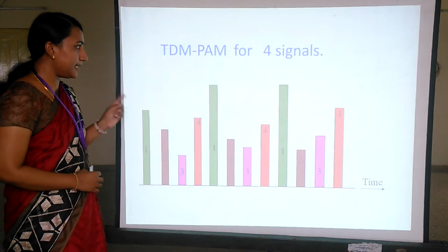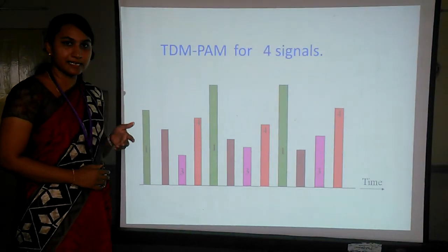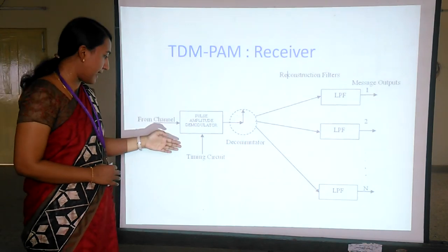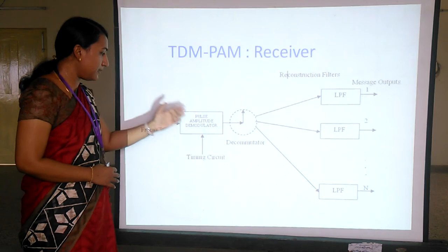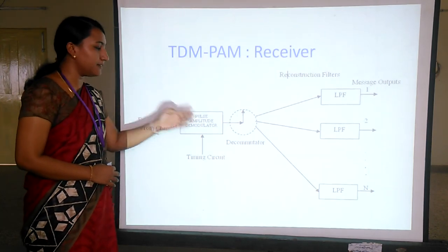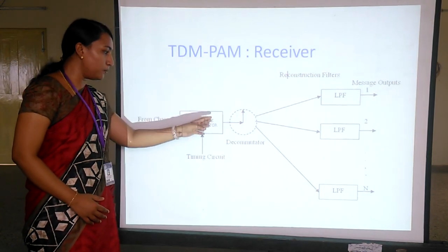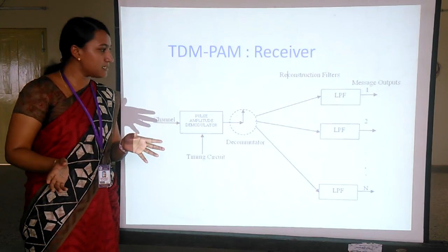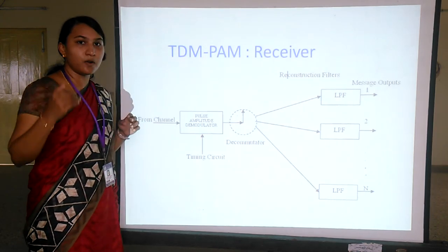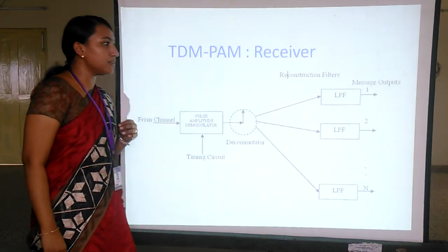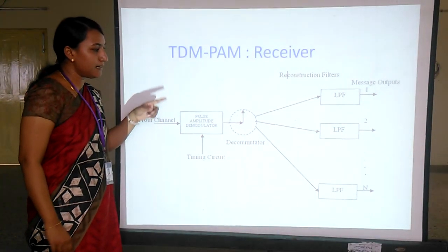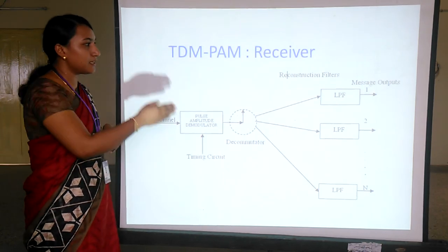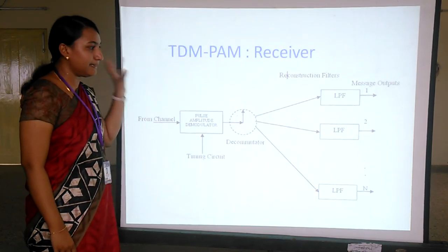This is an example of TDM-PAM for 4 signals, where 4 different signals are interleaved in this fashion. Coming to the receiving end, the signal from the channel is passed through a pulse amplitude demodulator. The output of the demodulator is passed into the decommutator, which distributes the signal to each corresponding user. The output of the decommutator is filtered, and each sample is passed to its particular receiver, giving the output message signal.